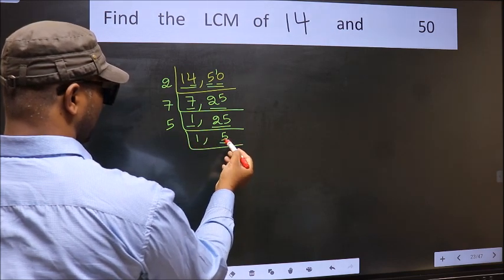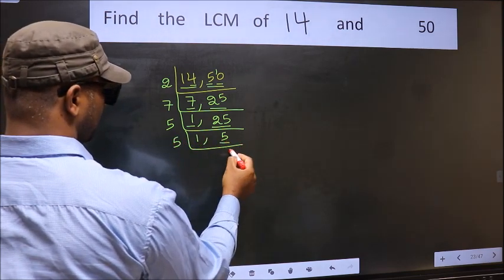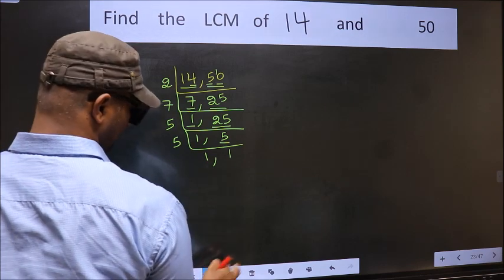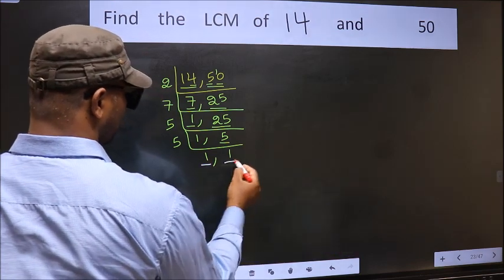Now, we have 5. 5 is a prime number, so 5 times 1 is 5. So, we got 1 in both the places.